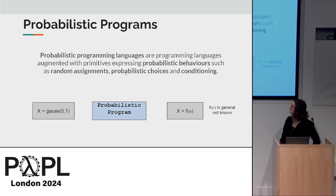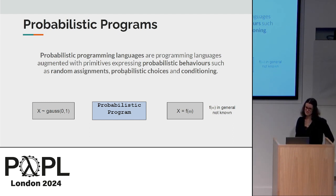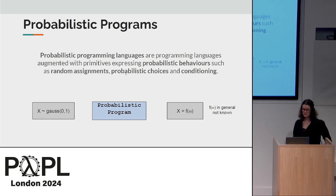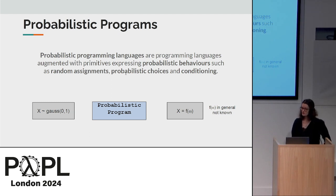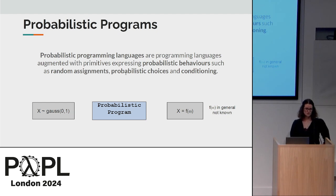Before starting, I wanted to recall quickly what a probabilistic programming language is. It's just a programming language augmented with primitives expressing probabilistic behaviors, such as random assignments — meaning I assign a variable with a probability distribution — probabilistic choice, meaning I execute a subprogram with a certain probability p, or conditioning, meaning I constrain a given distribution to take values in a certain range.